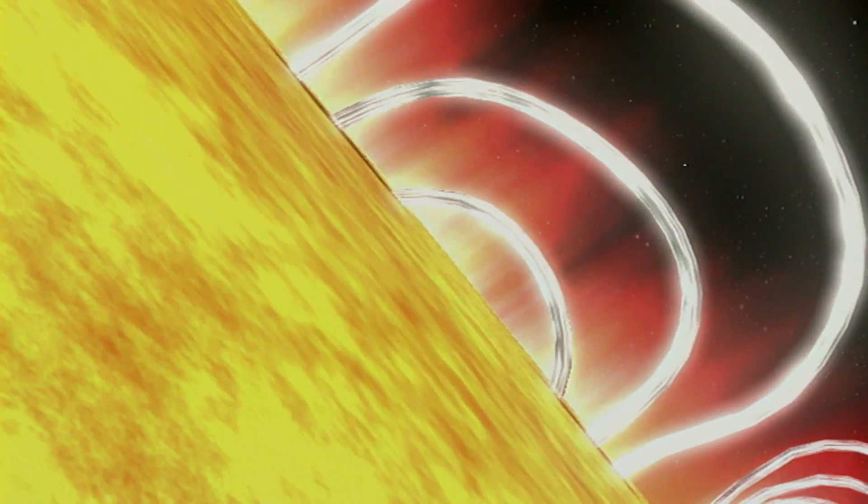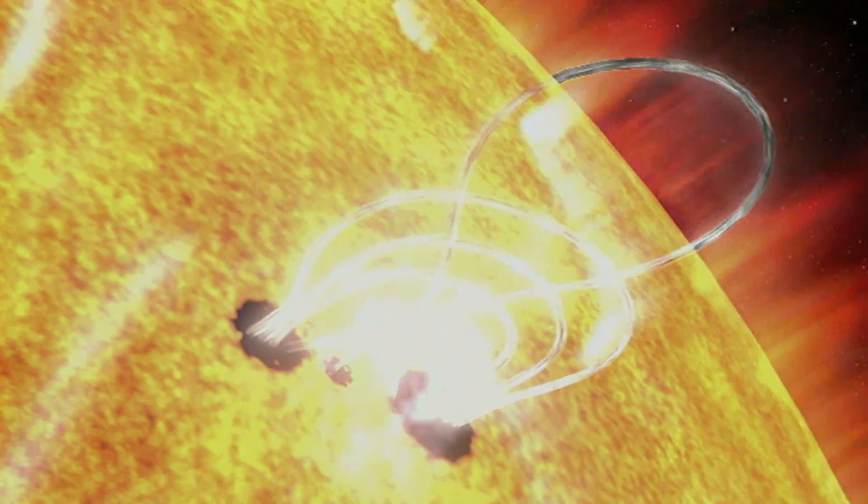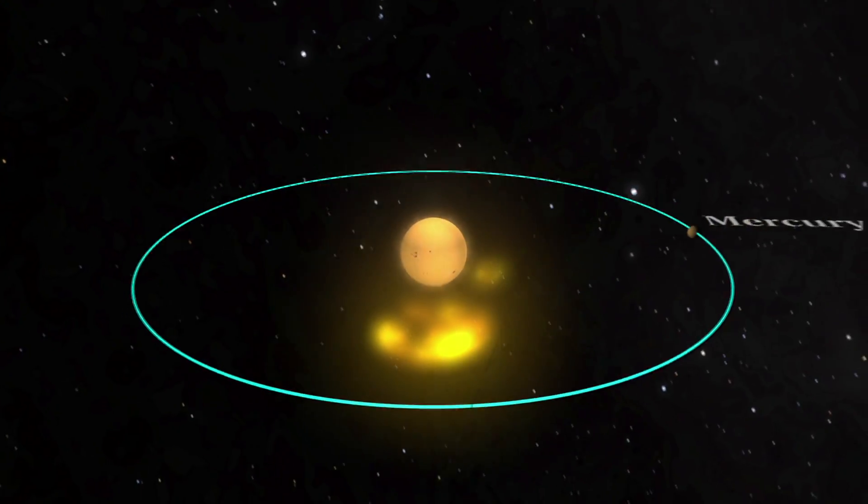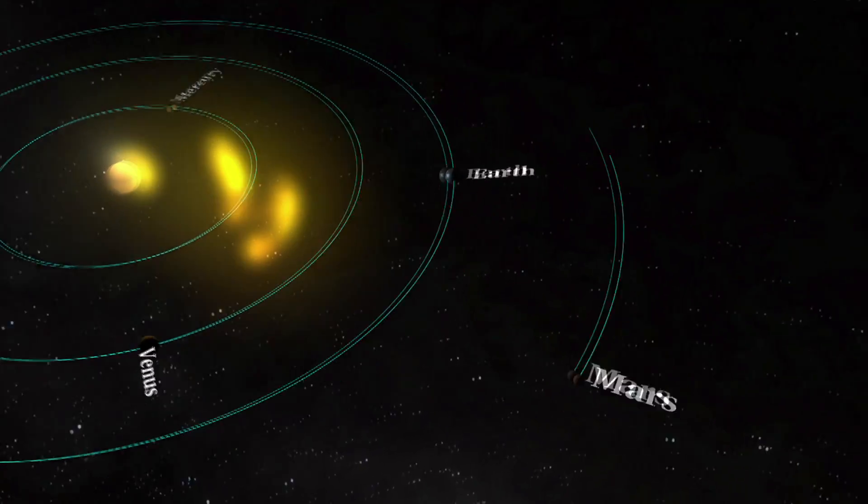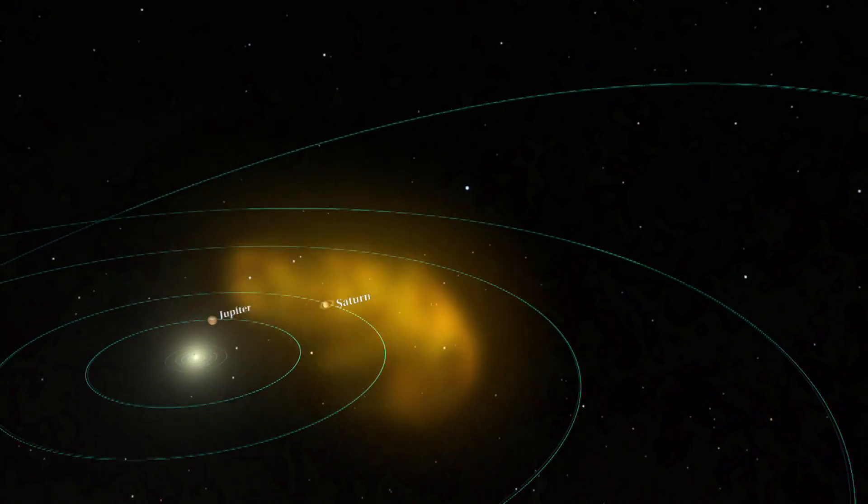The number of sunspots is important because sunspots are the visual markers of where powerful magnetic fields have emerged from the Sun's interior. These magnetic fields power solar flares and coronal mass ejections, which can affect Earth and other objects in the solar system. As the sunspots increase, so does the frequency and severity of flares and CMEs.